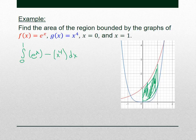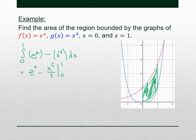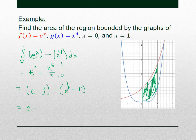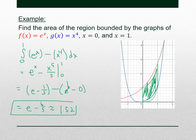Take the antiderivative: the antiderivative of e^x is e^x, and for x^4 that's x^5/5, evaluated from 0 to 1. Plug in 1 and you get e − 1/5. Plug in 0, you get e^0 − 0; remember e^0 is just 1. So that's e − 1/5 − 1 = e − 6/5. That's your exact answer, approximately 1.52. That is the area bounded by the graphs of f and g from 0 to 1.